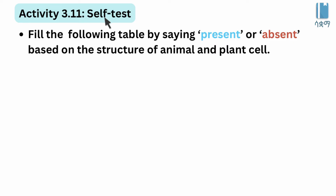Activity 3.1 self-test: Fill in the following table by saying present or absent based on the structure of animal and plant cells.